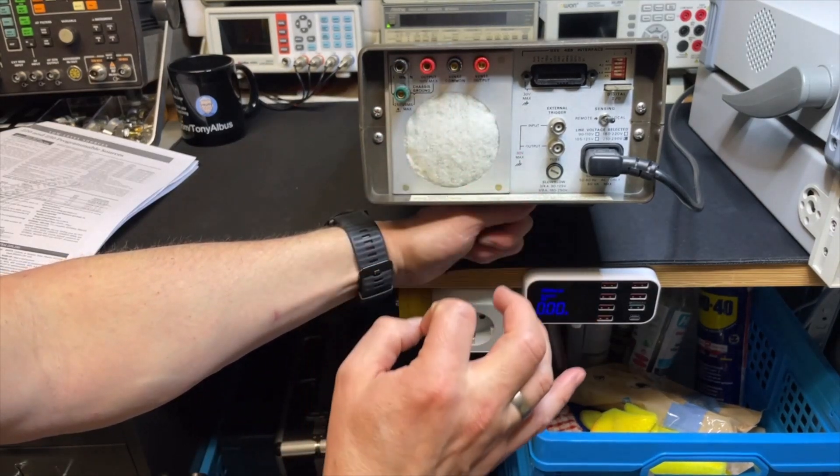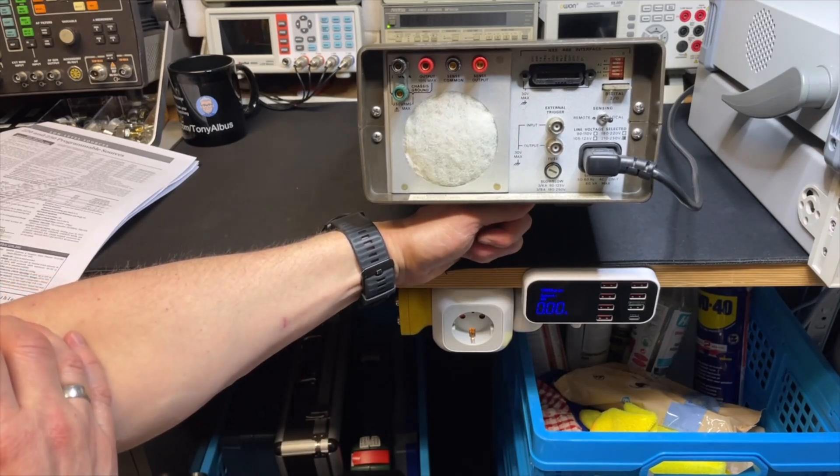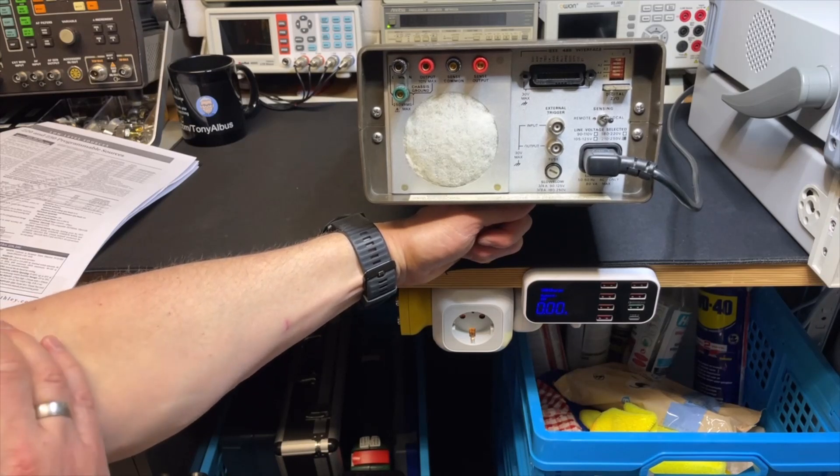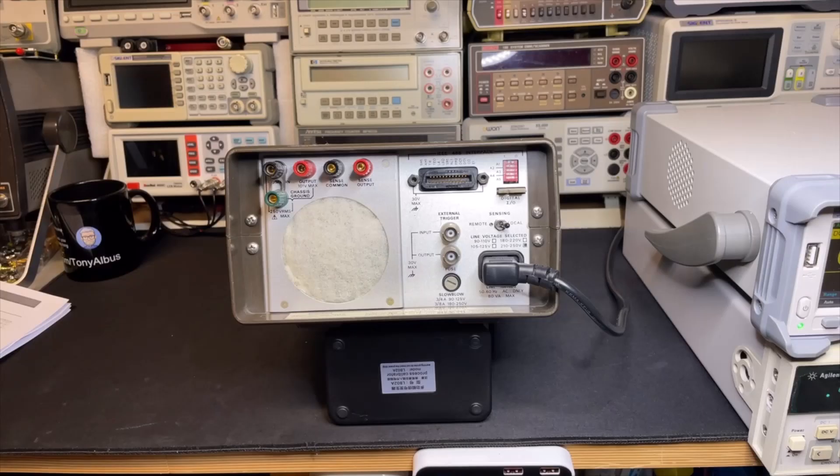So you have two main wires that go to your device you want to measure. And you have the sense wires. You put that as close to the point where you want to measure as possible. And then if there is any voltage drop, it will be automatically corrected by the sense wires.